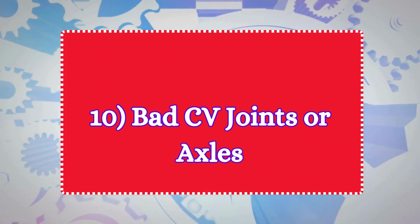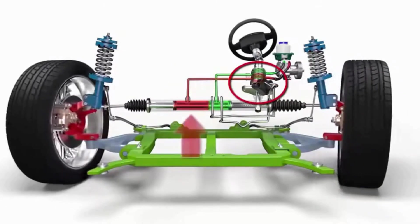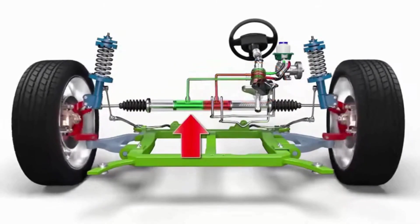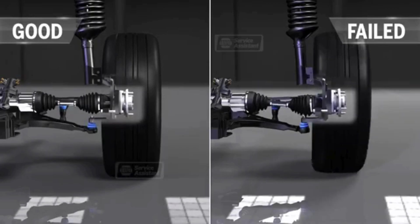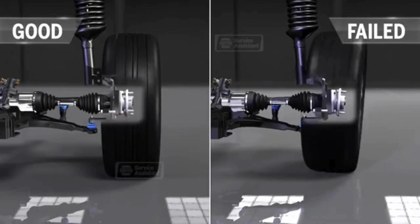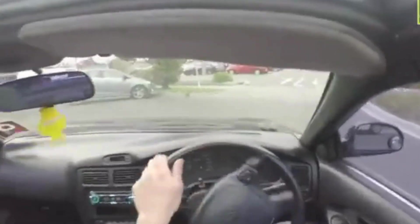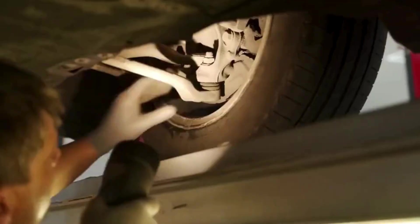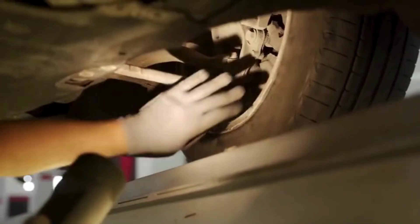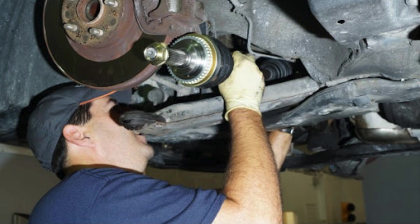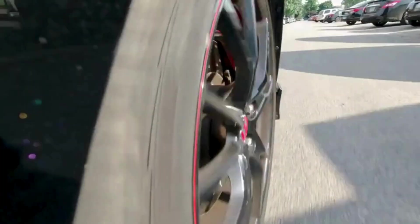10. Bad CV Joints or Axles. CV Joints are part of the drivetrain that connect the transmission to the wheels. If the CV Joints or Axles are damaged or worn, they may not rotate smoothly, causing vibrations or jerks when the car accelerates, especially when turning or when driving at low speeds. Inspect your CV Joints or Axles. If they are damaged, have them repaired or replaced. This will ensure smooth power delivery to the wheels.